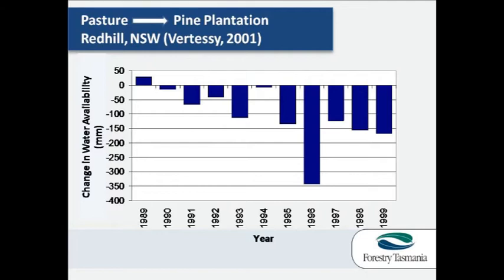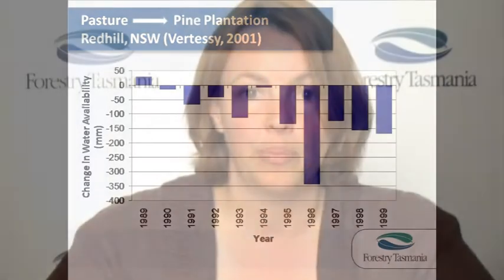This chart shows on the horizontal axis the years since a change in land use occurred within an area. Where columns are above zero this represents a time when there is increased water available; where columns are below zero it represents decreased water availability. You can see that once pasture is converted to plantation there is typically a decrease in water availability.